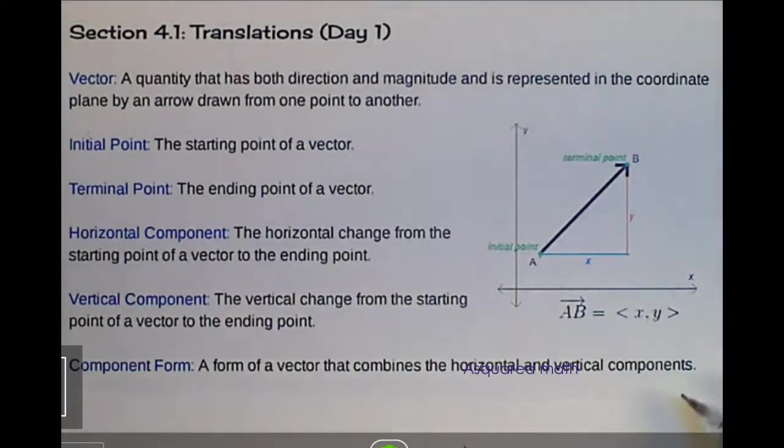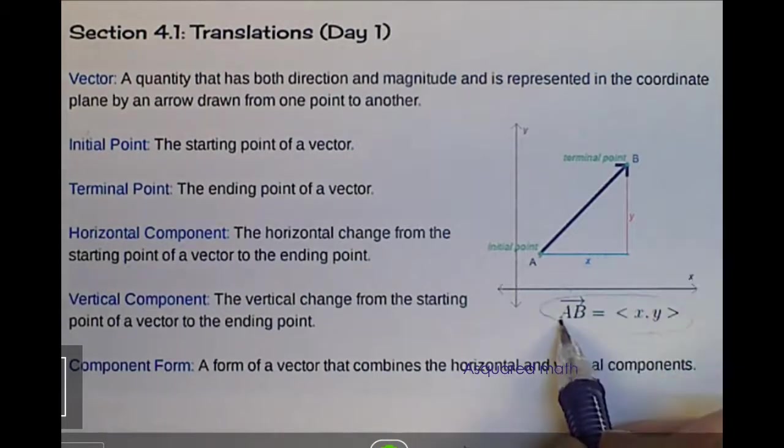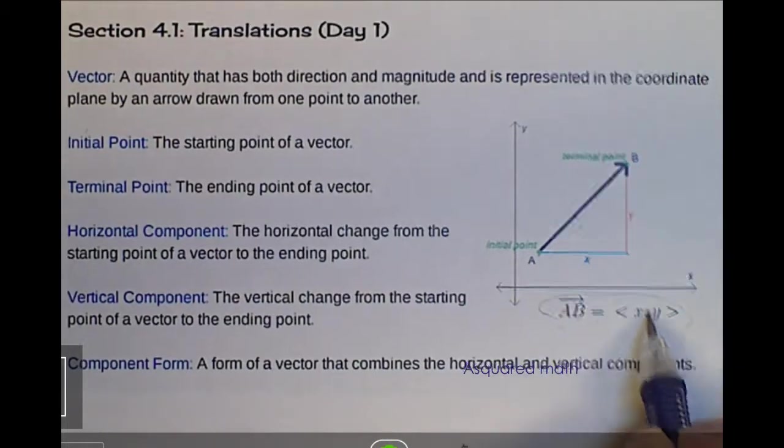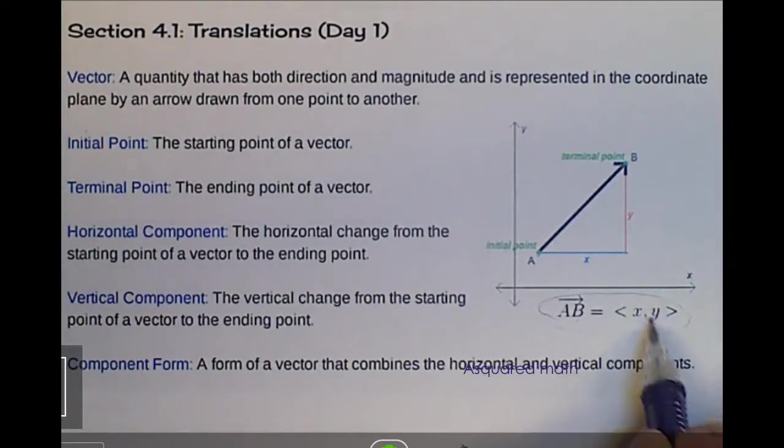How we denote or write vectors is in component form, which is this right here. So this indicates vector a,b is written as there's a change in our x and a change in our y.